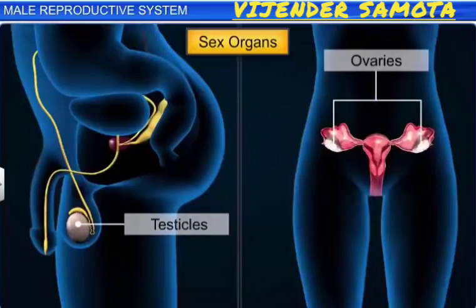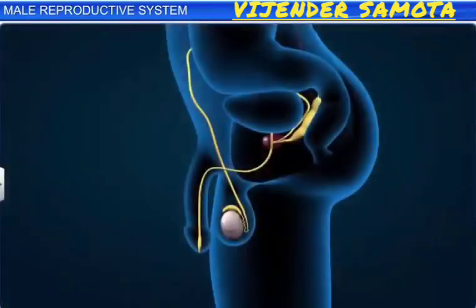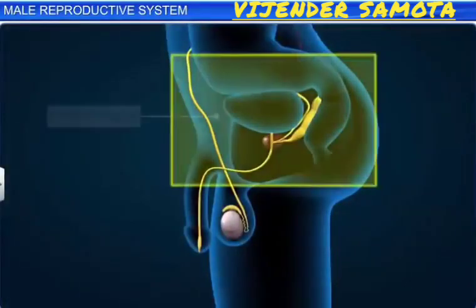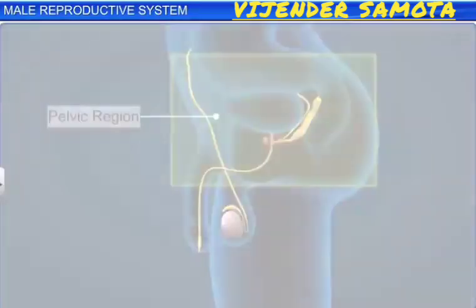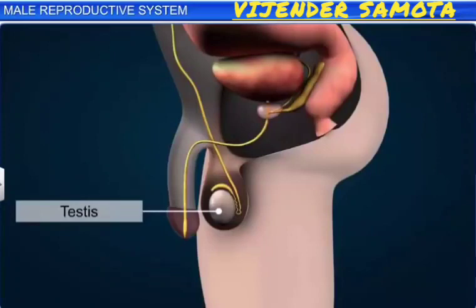Let us learn about the organs of the male reproductive system. The male reproductive system is located in the pelvic region. It includes the testes, accessory ducts, accessory glands, and external genitalia.